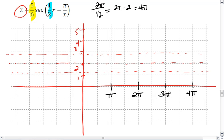And this should be a pi over 2 down here. We're shifting right by a quarter of a period.